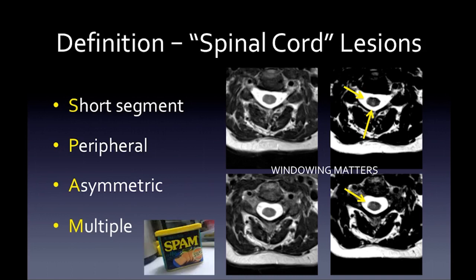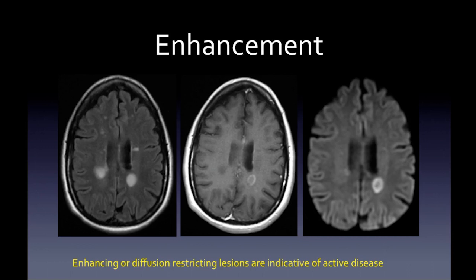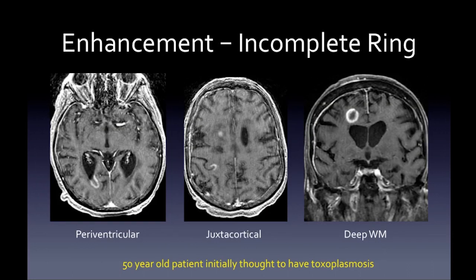Enhancing or diffusion-restricting lesions indicate active disease. A single slice can satisfy McDonald criteria for dissemination in time if one lesion is enhancing and another is not. When you see enhancement, look for the incomplete ring pattern — classic for MS or demyelination. One case was initially thought to be toxoplasmosis, but three additional lesions showed incomplete peripheral ring enhancement, confirming demyelination.